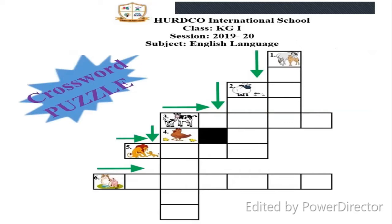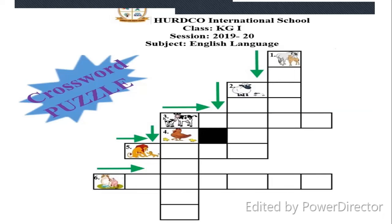First, we have to look at the picture clues given in the puzzle. The next thing we have to keep in mind is the arrow and which way it is pointing. We also have to write one letter in each box — we cannot write the whole word or more than one letter in a box. This is the thumb rule of the crossword puzzle.